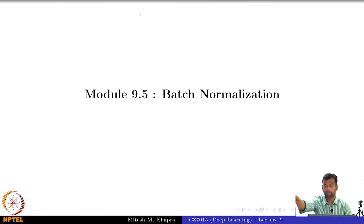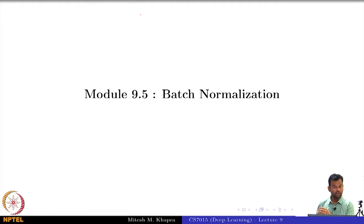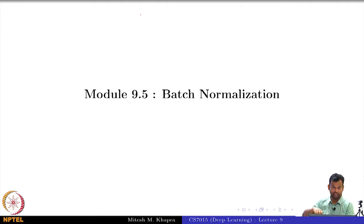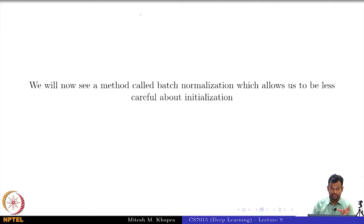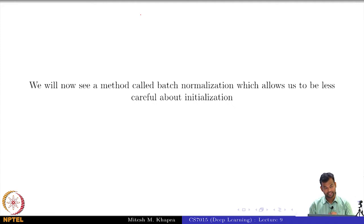We will end with something known as batch normalization, which is almost a de facto standard, at least in convolutional neural networks. So if you are dealing with convolutional neural networks you will use something known as batch normalization. This is a method which allows us to be less careful about initialization.